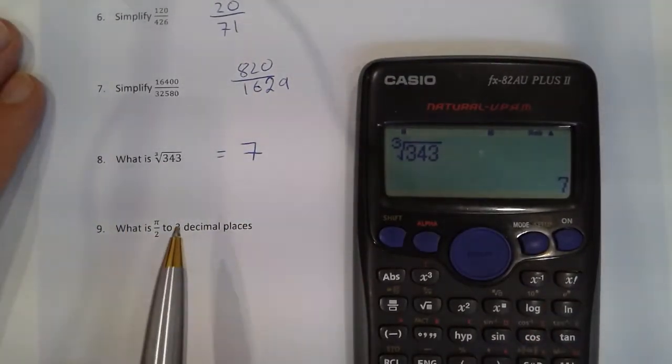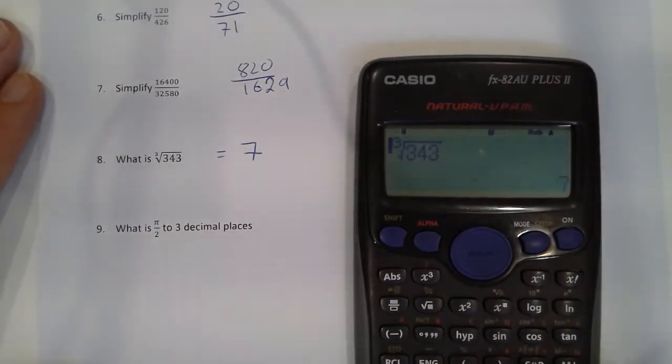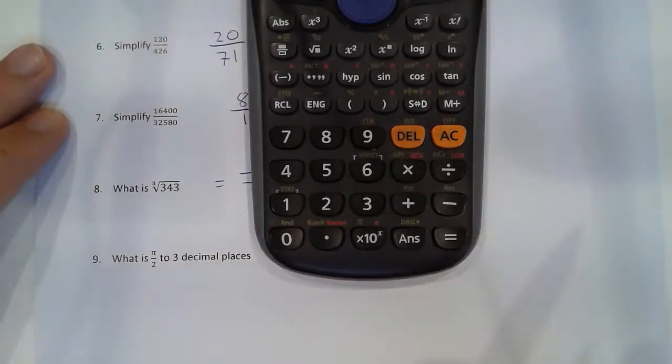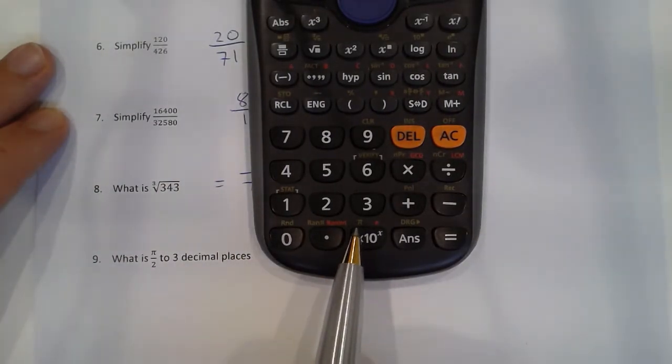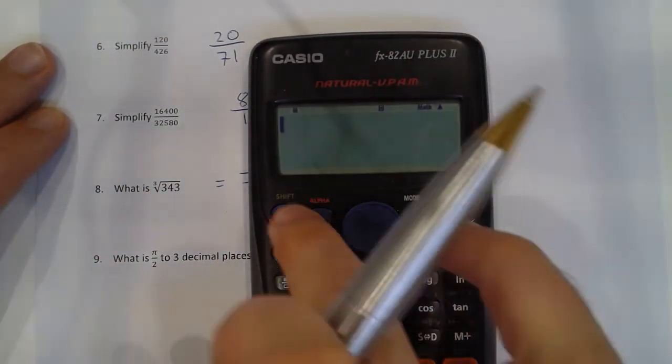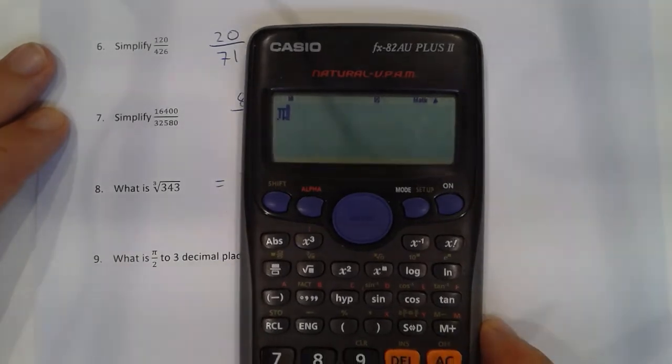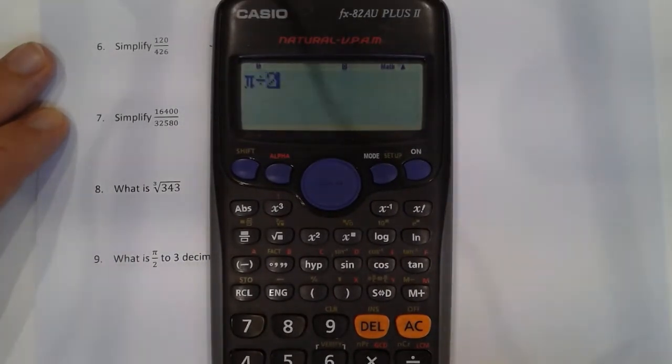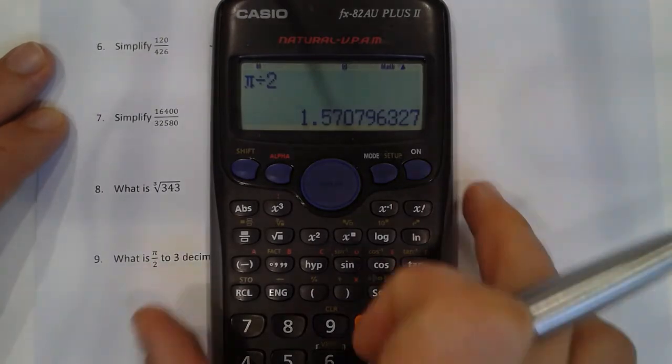well, is pi divided by 2 to 3 decimal places? Now pi is just above here in yellow, so therefore it's the shift button again. So shift button to get pi, and then I just press divided by 2, and it'll give me the answer for me.